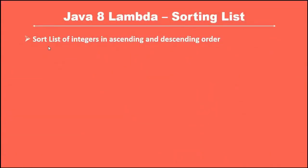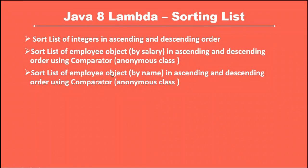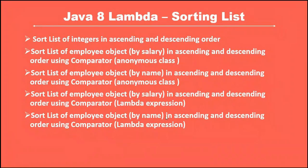First we'll start with the basics — sorting a list of integers in ascending and descending order. Then we'll sort an Employee object by salary in ascending and descending order, first using anonymous implementation of Comparator, then we'll replace that with a lambda expression. We'll also sort employees by name in ascending and descending order.